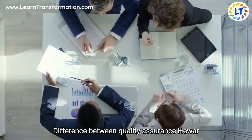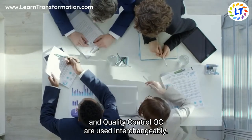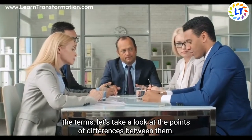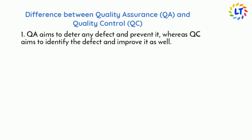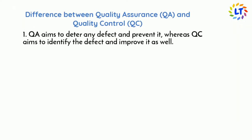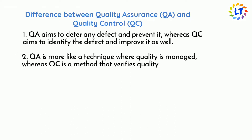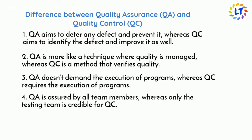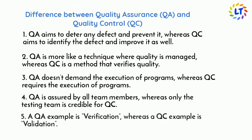Quality Assurance and Quality Control are often used interchangeably. Now that you have an overview of both terms, let's look at the differences between them. QA aims to deter and prevent any defect, whereas QC aims to identify and improve defects. QA is a technique where quality is managed, whereas QC is a method that verifies quality. QA doesn't demand execution of programs, whereas QC requires it. QA is assured by all team members, whereas only the testing team is responsible for QC. A QA example is verification, whereas a QC example is validation.